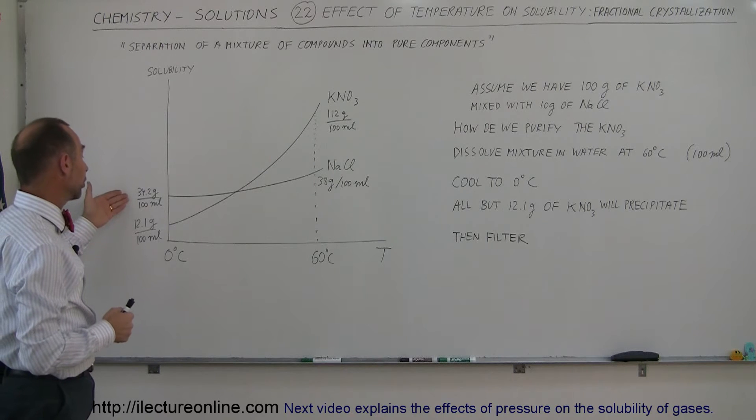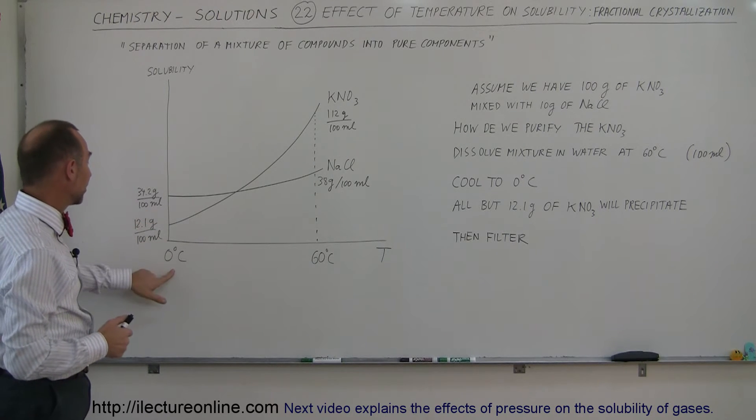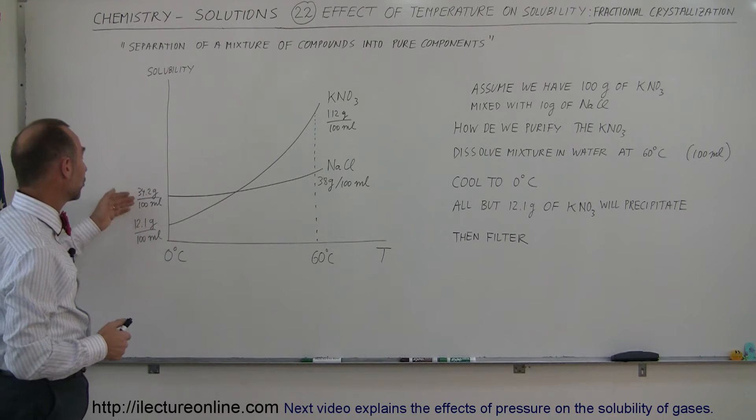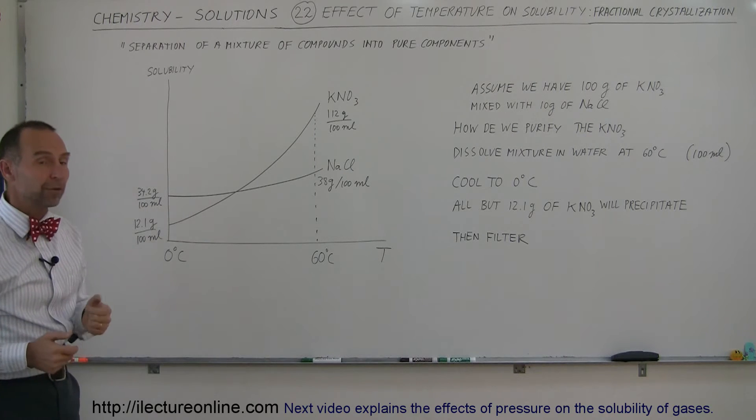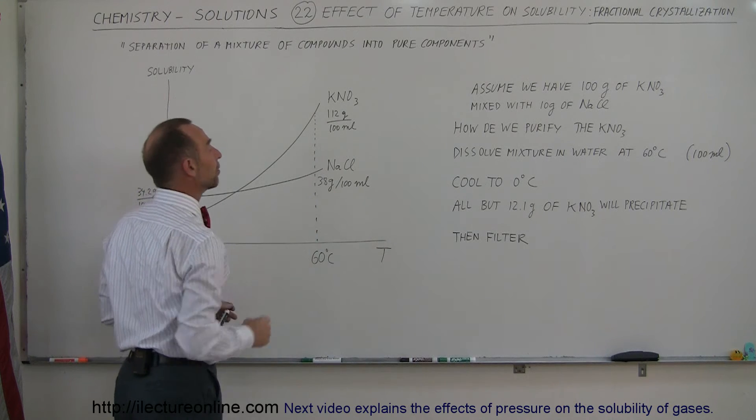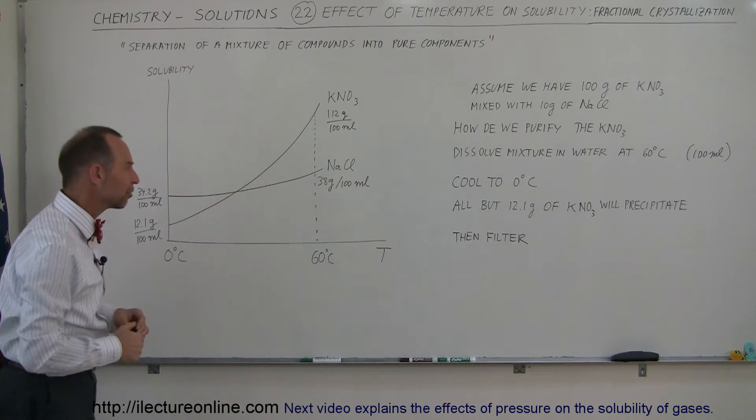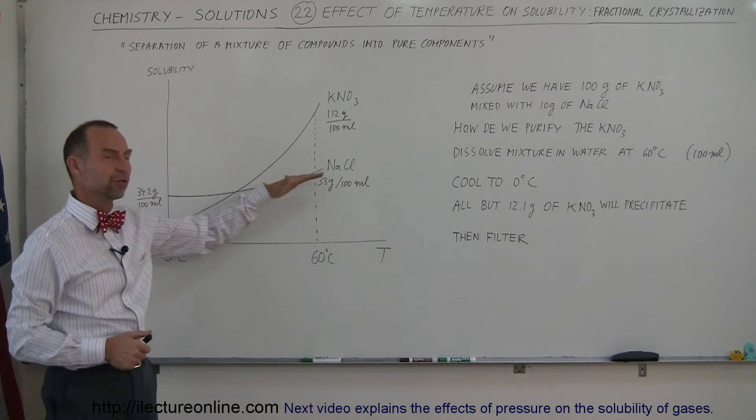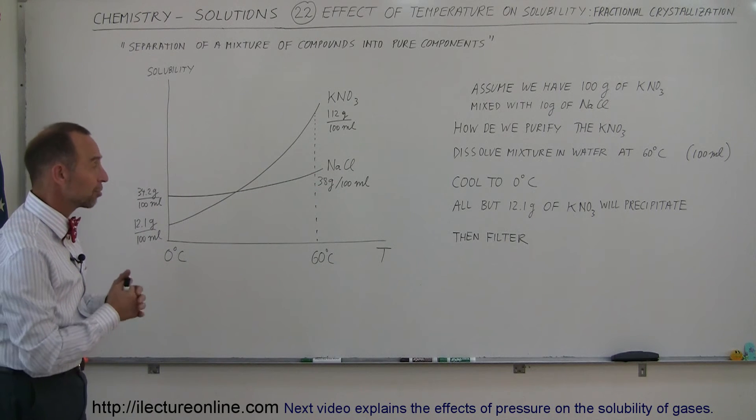When it comes to sodium chloride, at zero degrees centigrade, 100 milliliters of water can dissolve 34.2 grams of sodium chloride, and at 60 degrees centigrade we can dissolve 38 grams per 100 milliliters of water. So you can see that for sodium chloride, there's not a lot of difference with the 60 degree temperature change.